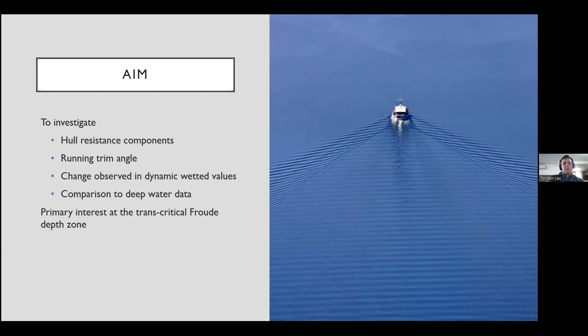As a vessel passes through the waterway, we experience a wave wake pattern, which is similar to the image you can see on the right there. This wave wake pattern is made up of two waves, primarily diverging waves and transverse waves. This wake pattern is of interest as it can have adverse effects on the environment, on other water users, and also on the vessel itself in terms of power and resistance. Therefore, we chose to investigate the hull resistance components, running trim angle, and the change observed in dynamic wetted values. We also did a comparison to deep water data with our primary interest in the transcritical Froude depth zone.